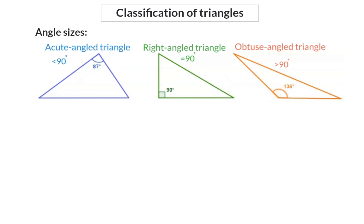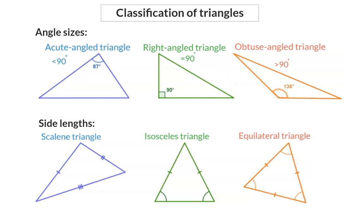Triangles are classified according to angle sizes and side lengths. When classifying according to angle sizes, we focus on the biggest angle in the triangle and name the triangle according to that. If this angle is smaller than 90 degrees, it is called an acute angled triangle. When this angle is exactly 90 degrees, we call it a right angled triangle. And if this angle is bigger than 90 degrees, it is called an obtuse angled triangle.